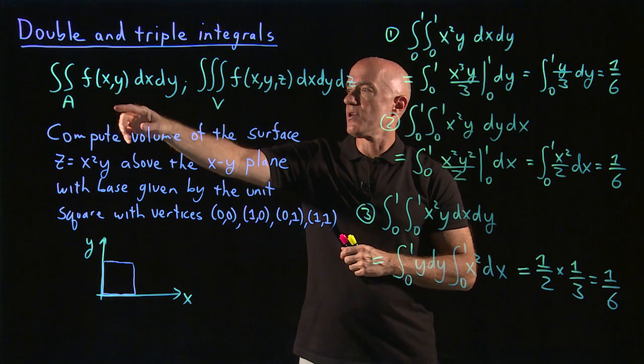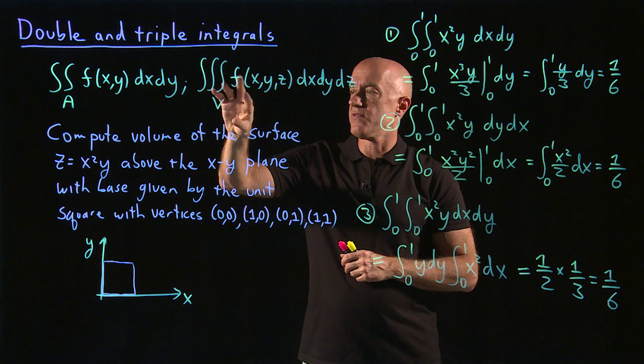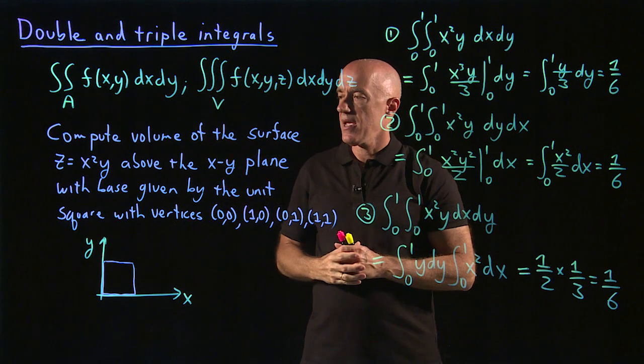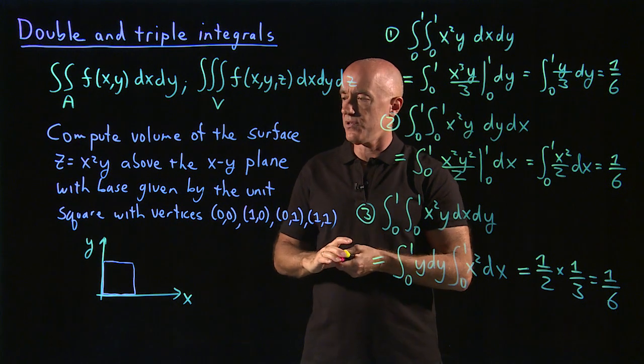These are called double integrals and triple integrals. A double integral is going to be over some area. A triple integral is going to be over some volume.